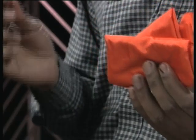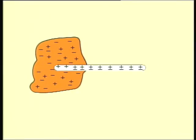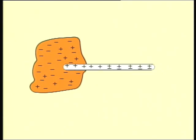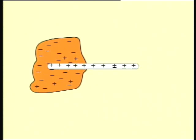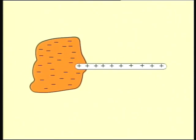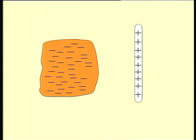What happens when we rub a glass rod with a silk piece? Compared to the glass, the silk piece has a greater affinity for electrons. So in this case, the glass rod will give up electrons to the silk. Hence, the glass rod will become positively charged and the silk will become negatively charged.